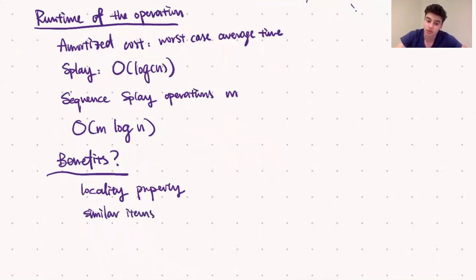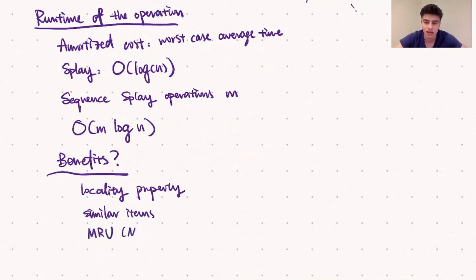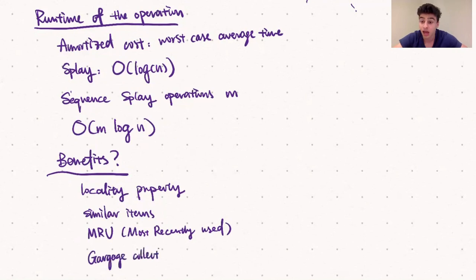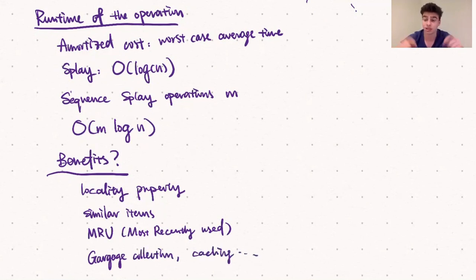It's only natural that you would use a splay tree in MRU applications. MRU stands for most recently used — applications that want to re-access most recently used elements and elements similar to the most recently used. Such things in real life may include garbage collection algorithms or caching for websites. I hope you enjoyed this tutorial on splay trees.